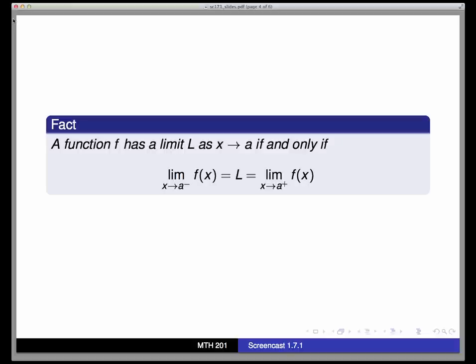In fact, we saw this fact in the section that a function f has a limit as x approaches a if and only if the limit as x approaches a from the left and the limit as x approaches a from the right both exist and both equal each other, namely the number L.